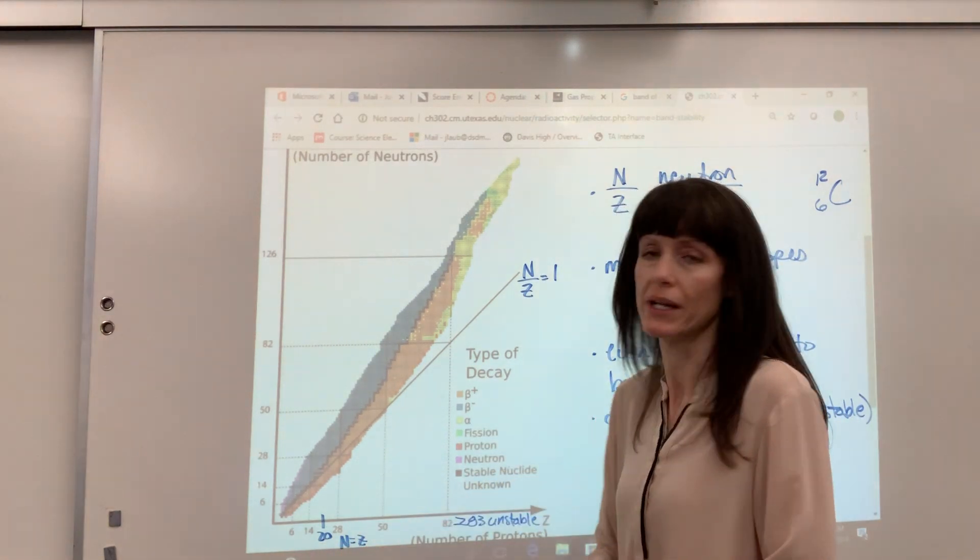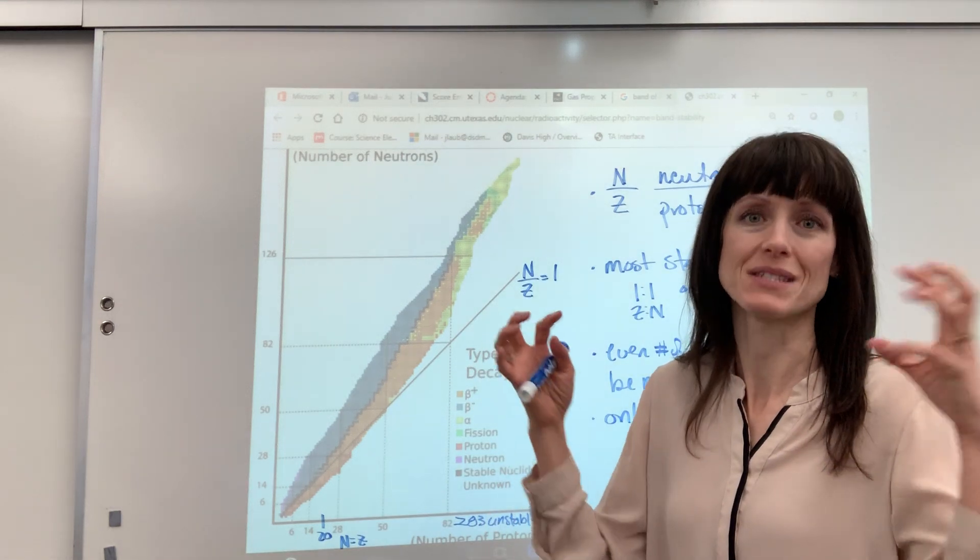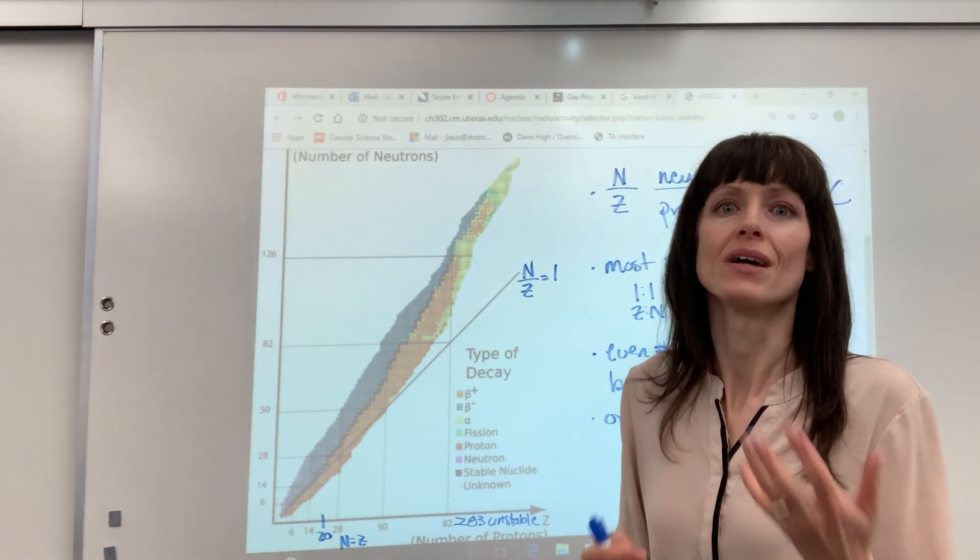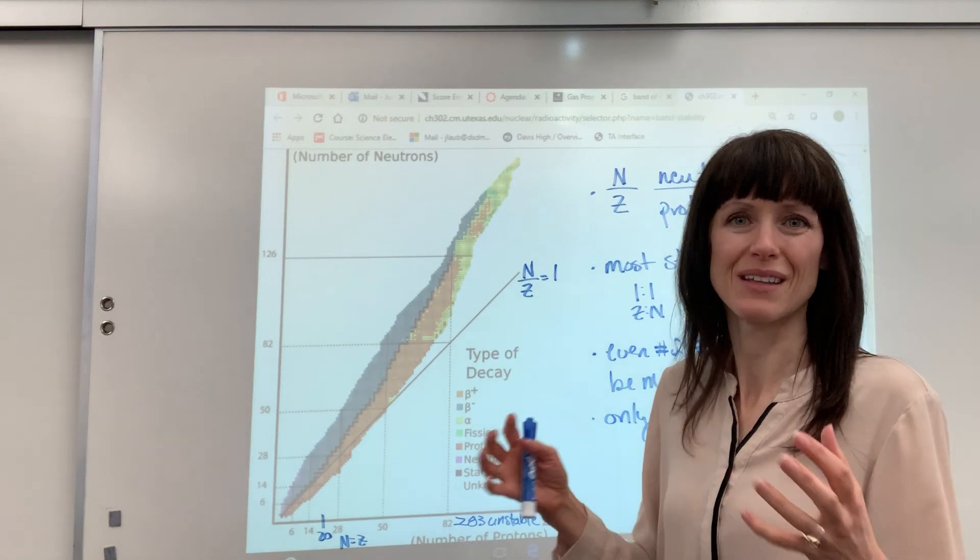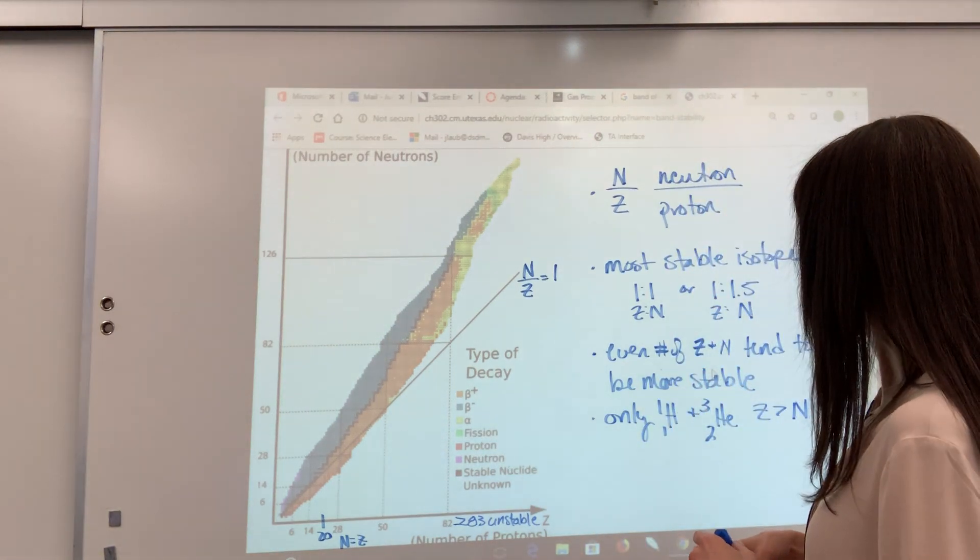So up to 20, we tend to have a 1 ratio. But then after 20, it's always going to be greater than 1. We need those neutrons to help stabilize the nucleus with all those positive protons so that they don't repel each other.